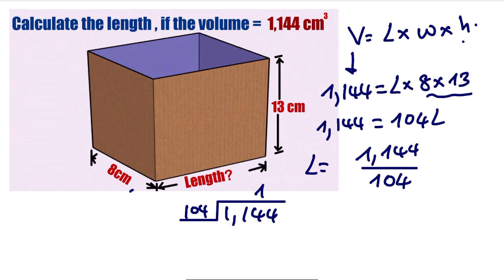If we multiply 104 and subtract, this is 0, this is 1, this is 0, 4. So we have 104 divided by 104 will give us 1. So this implies our answer is 11 centimeters.